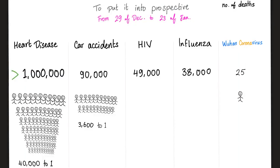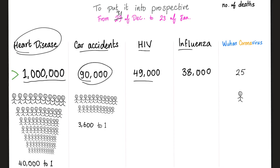Newspapers love hysteria — epidemics, outbreaks — because it sells papers and gets clicks. To put things in perspective: from December 31st to January 23rd, over 1 million people died from heart disease, 90,000 from car accidents, 49,000 from HIV, 38,000 from influenza, and 25 from the Wuhan coronavirus. You'll never hear that in tomorrow's newspaper. You are way more likely to die from heart disease than from any coronavirus.